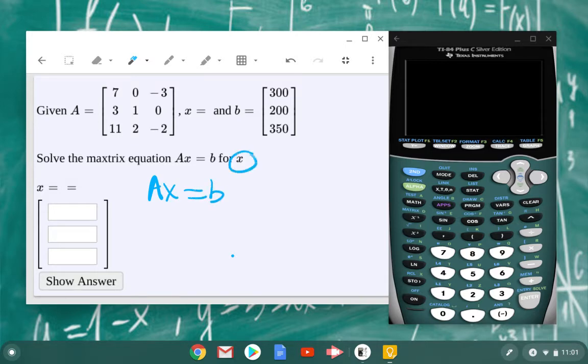We want to find the matrix X, and we can solve this using an inverse. What we really need to do is undo the multiplication by matrix A. We can't do that with matrix division because that doesn't exist,